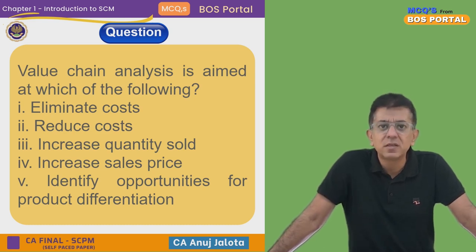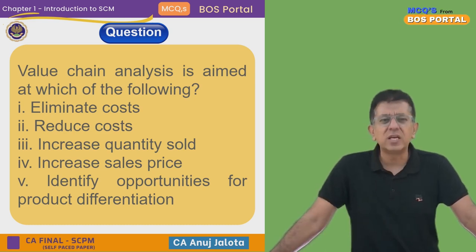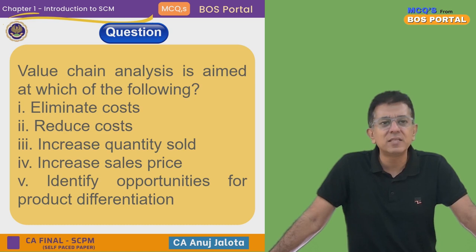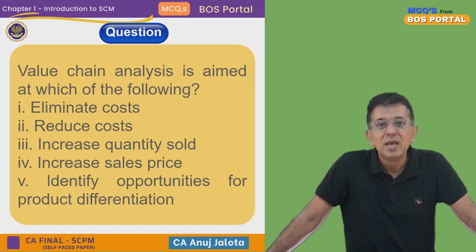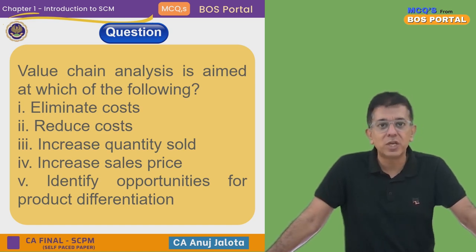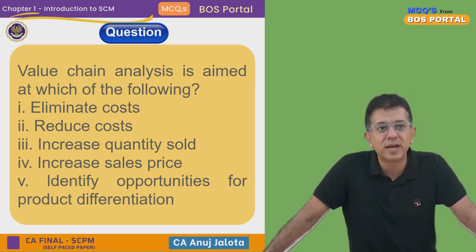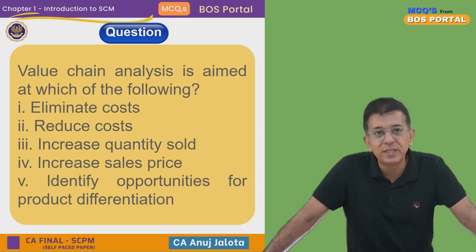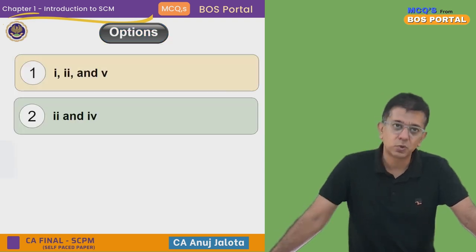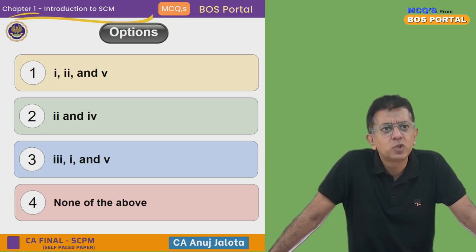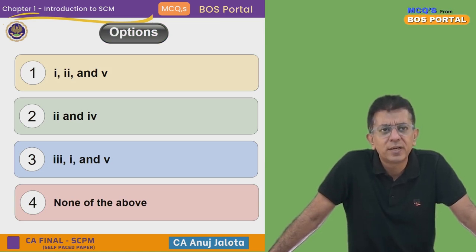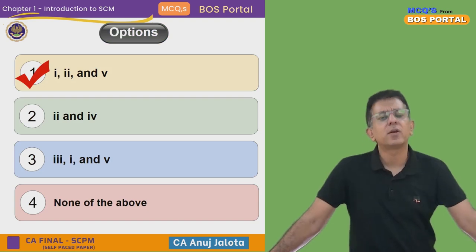So one, two, and five should be the answer. Value chain analysis has nothing to do with increasing the quantity sold or increasing the sales price — those depend on your marketing strategies, not on value chain analysis. So the correct answer is one, two, and five, which means option number one is the correct answer.